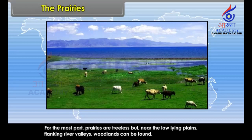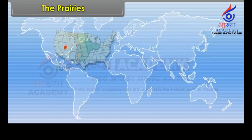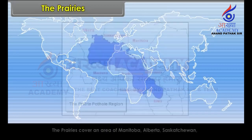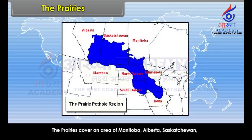But near the low-lying plains flanking river valleys, woodlands can be found. They extend from the Rocky Mountains in the west to the Great Lakes and Appalachian Highlands in the east.